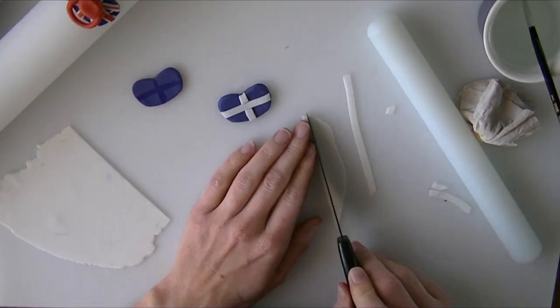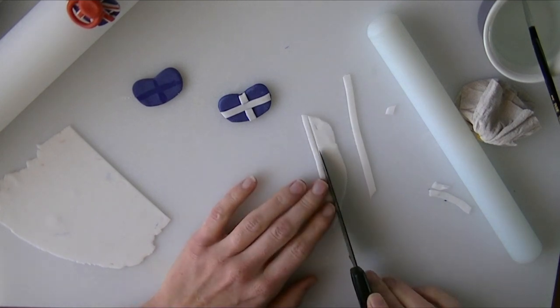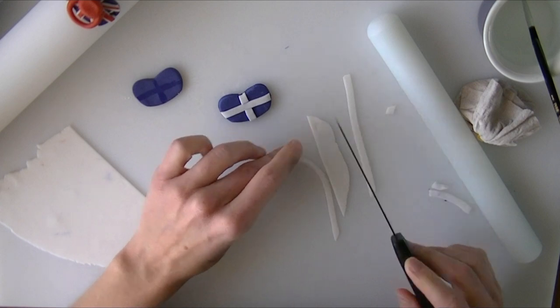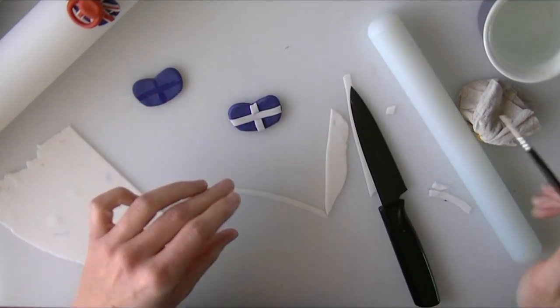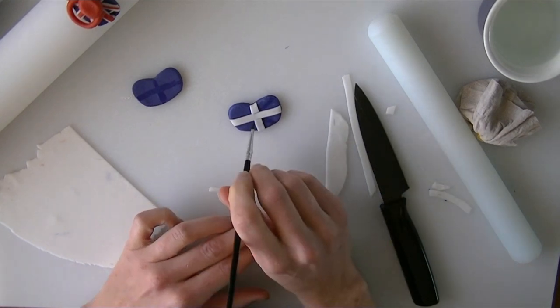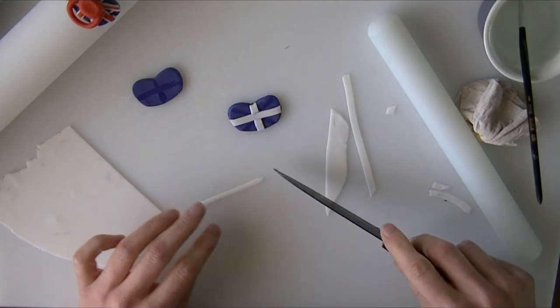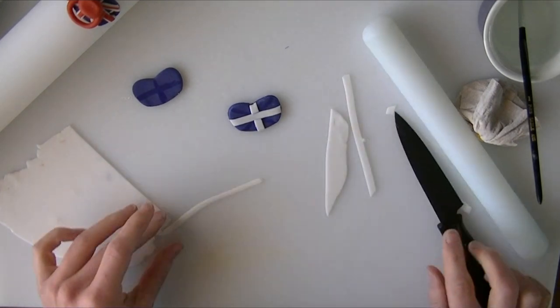I'm going to cut a thinner piece now. We're going to put these coming out from the center. Again, I'm just going to add a bit of water where I want each of them to go.